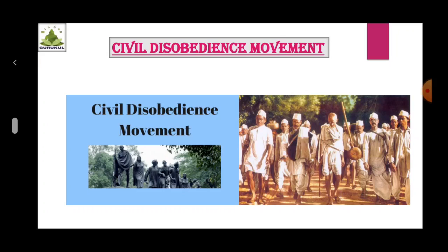Gandhiji chose Dandi, a seashore in Gujarat, to begin the Salt Satyagraha. On 12th March 1930, Gandhiji set out from Sabarmati Ashram with 78 followers for launching the Salt Satyagraha. A distance of approximately 385 km was covered on foot and Gandhiji delivered speeches in the villages on the way.